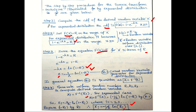To recap: in Step 1 we obtain the CDF of the desired random variable and set F(x) equal to r. In Step 3 we solve the equation. In Step 4 we generalize the equation for generating random variates.